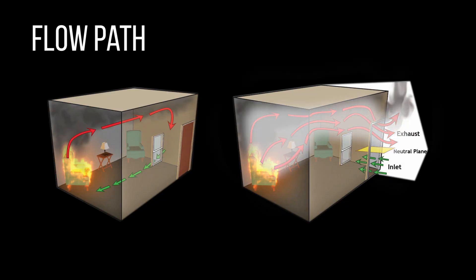A good incident action plan involves an understanding of where the fire is located and where it is spreading. Fire gases and heat will move from an area of higher pressure, typically where the fire is, to an area of lower pressure. This path of smoke and heat spread is known as the exhaust portion of the flow path.